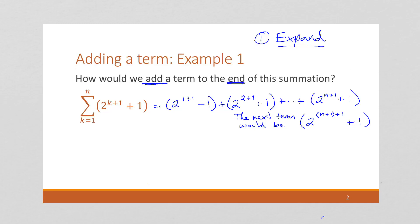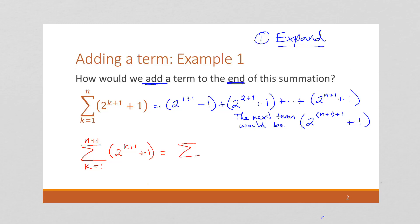So, if I want to add a term, I can't just say this is plus, because then this side wouldn't be correct. What I can do is write a new summation that includes this last term we just figured out. We go from k equals 1 but now to n+1 of 2^(k+1) + 1. This is going to be our old sum plus our new term. So, we have added this term to the end of that summation to get a new summation.